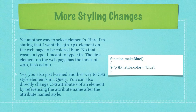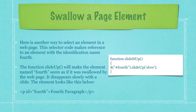Here I'm stating that I want the fourth paragraph element on the web page to be colored blue — and no, that wasn't a typo, I meant to type 'forth'. The first element on the web page has the index of 0 instead of 1. You also just learned another way to CSS-style elements in jQuery. You can also directly change CSS attributes of an element by referencing the attribute name after the attribute named 'style'.